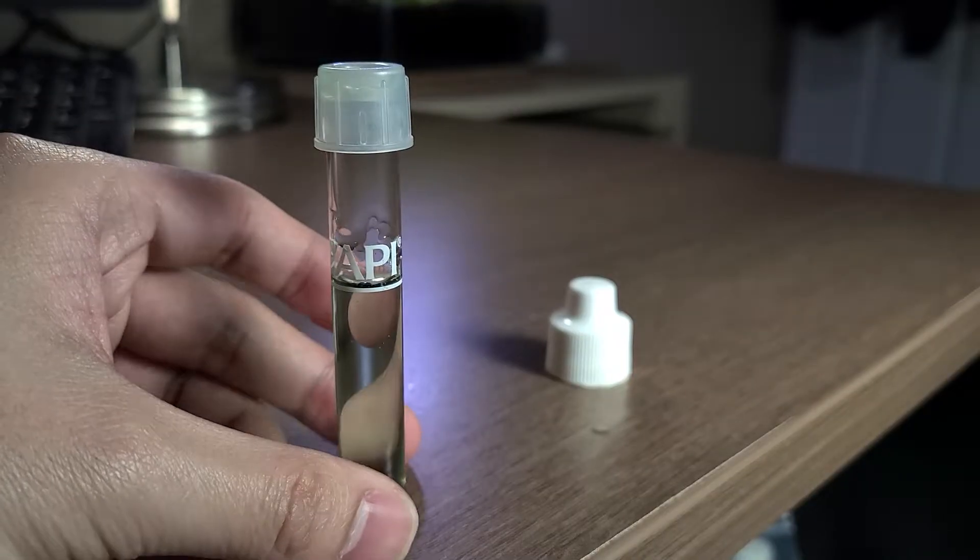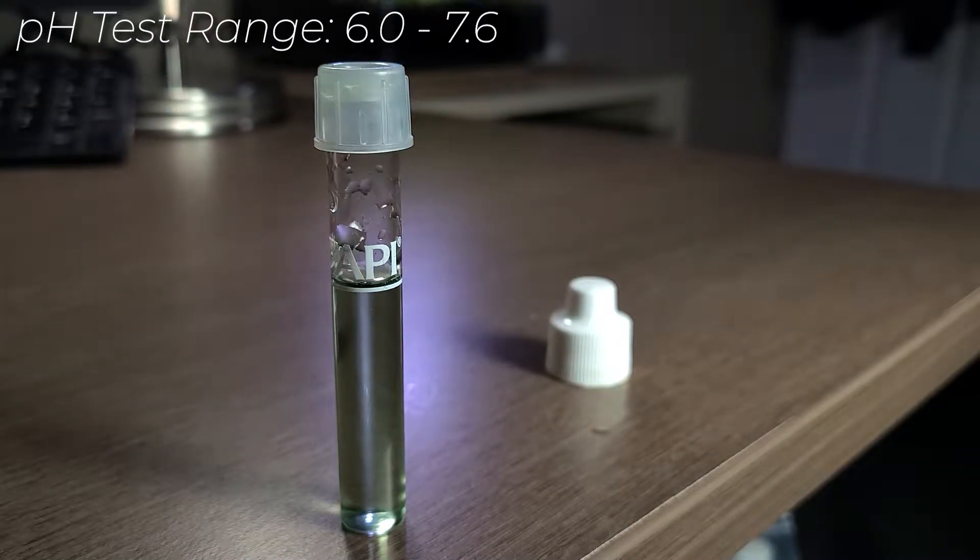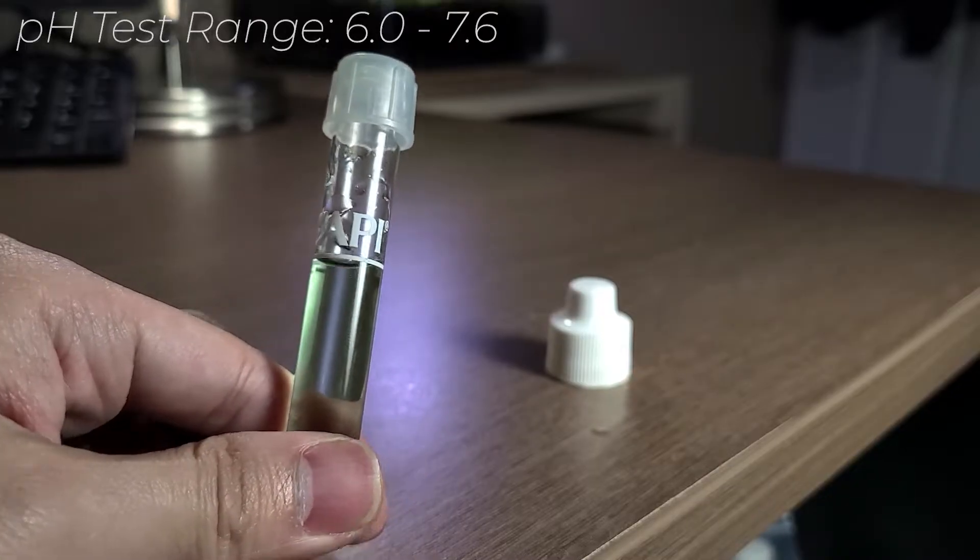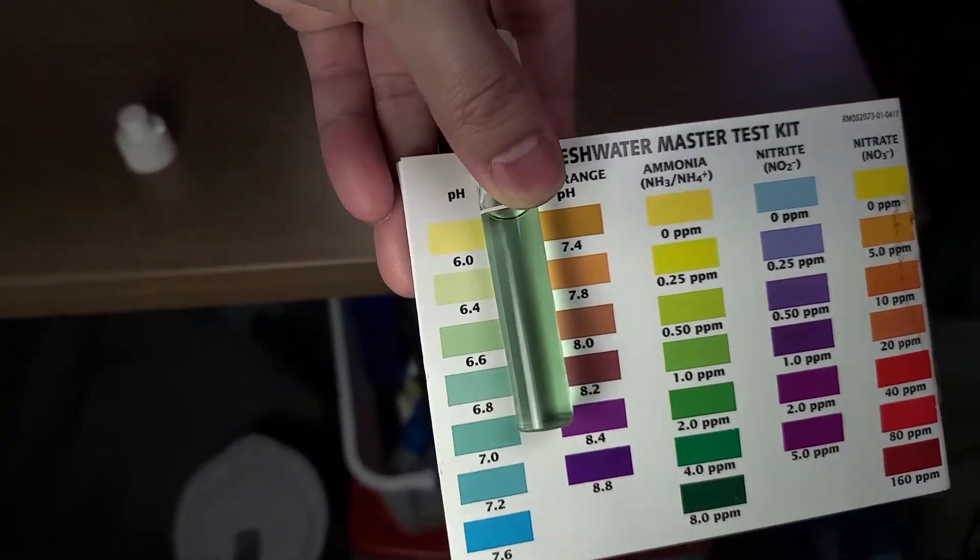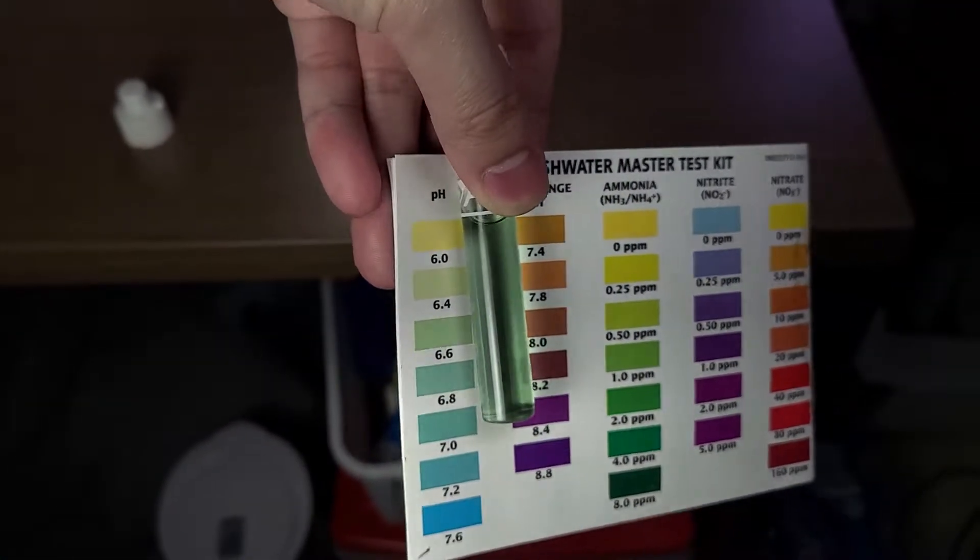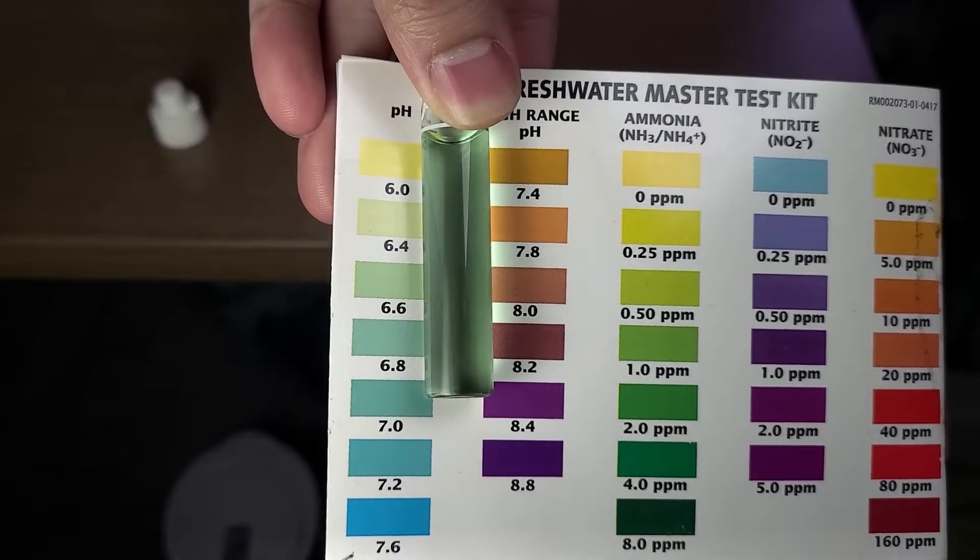This test will measure pH from 6.0 up to 7.6. Viewing the results in a well-lit room will help with determining its exact outcome. And as you can see here, the pH comes to around 6.6.